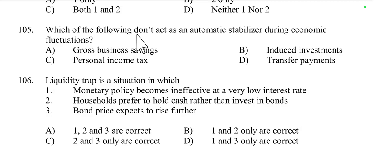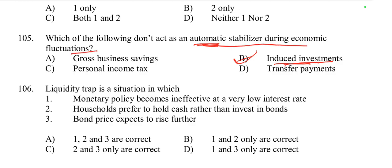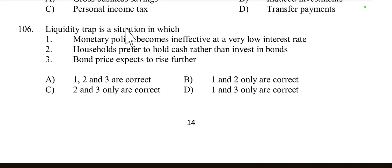Question 105: Which of the following does not act as an automatic stabilizer during economic fluctuations — gross business saving, induced investment, personal income tax, or transfer payments? Induced investment does not act as an automatic stabilizer because it is induced rather than automatic. It is the opposite of autonomous investment. Option B, induced investment, is correct.